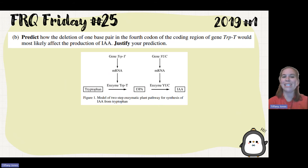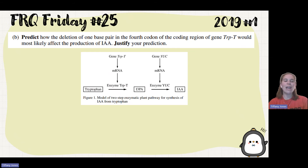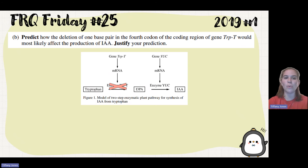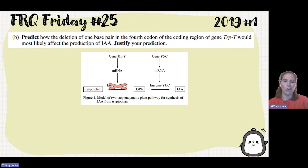Part B asks to predict how a deletion of one base pair in the fourth codon of the coding region of trypte would most likely affect IAA production and justify that prediction. A deletion of one base pair shifts the reading frame, making every codon downstream different, which produces completely different amino acids — resulting in a non-functional protein. Without functional enzyme trypte, the reaction converting tryptophan to I3PA doesn't occur, so there's less I3PA, meaning less IAA produced.